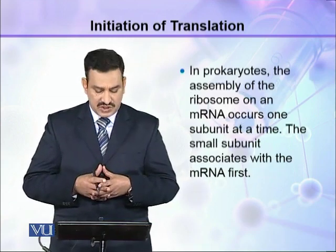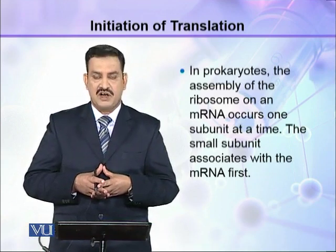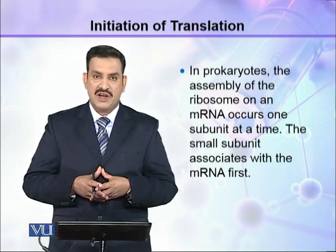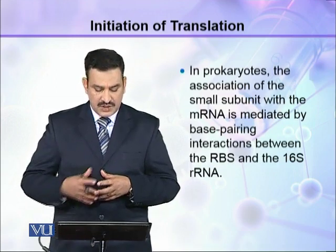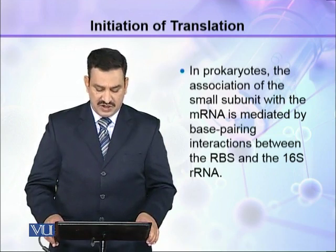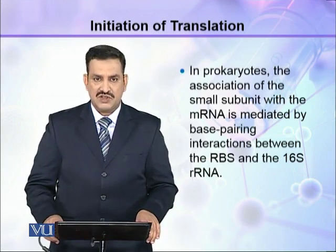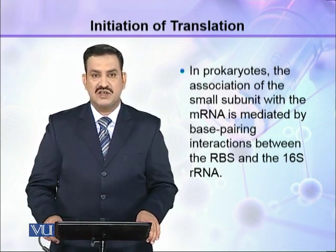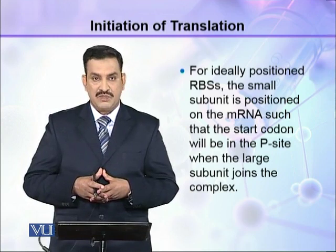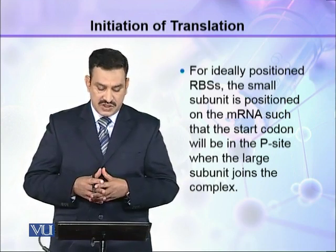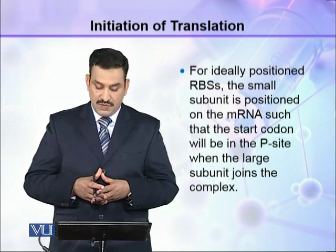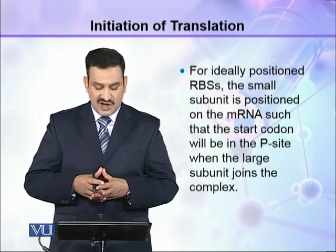In prokaryotes, the assembly of the ribosome on an mRNA occurs one subunit at a time. The small subunit associates with the mRNA first. The association of the small subunit with the mRNA is mediated by base pairing interactions between the RBS (ribosomal binding site) and the 16S rRNA of the ribosome. For an ideally positioned RBS, the small subunit is positioned on the mRNA such that the start codon will be in the P site when the large subunit joins the complex.